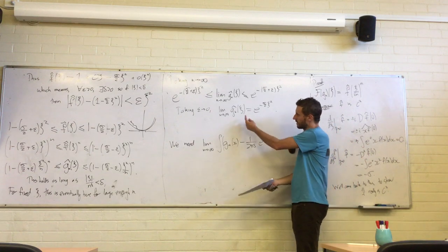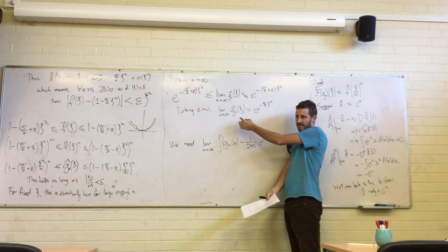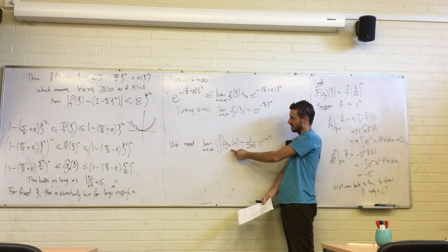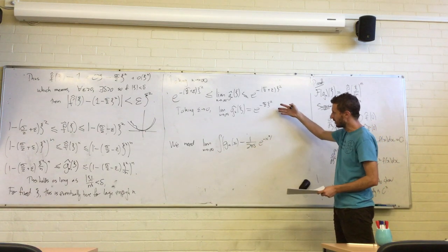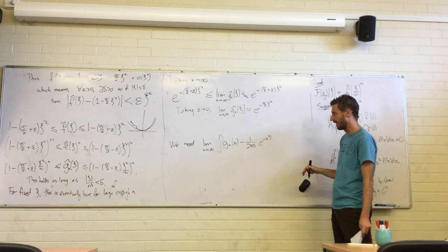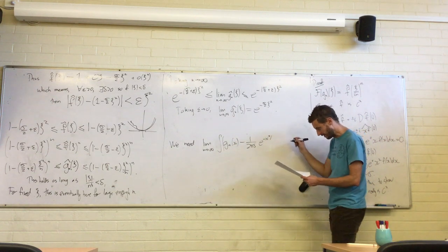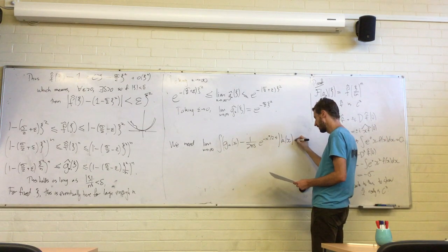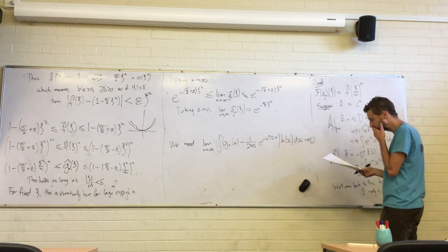The point is that what we've done is find the pointwise limits of the Fourier transforms. It's the function gn itself that we're interested in, and we need to understand how to get from pointwise convergence of Fourier transforms to weak convergence of the original functions.